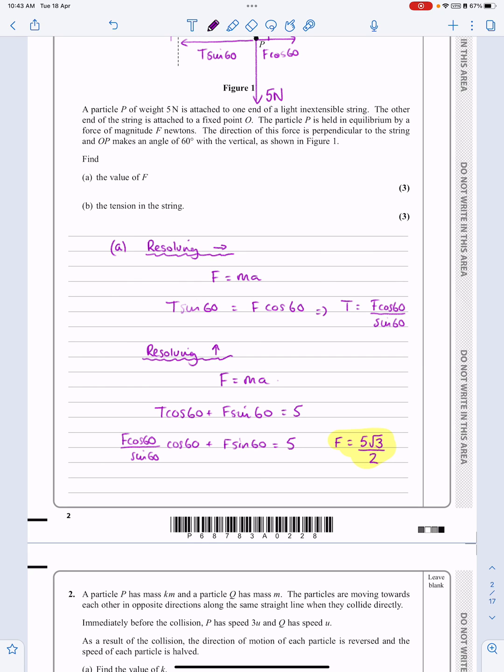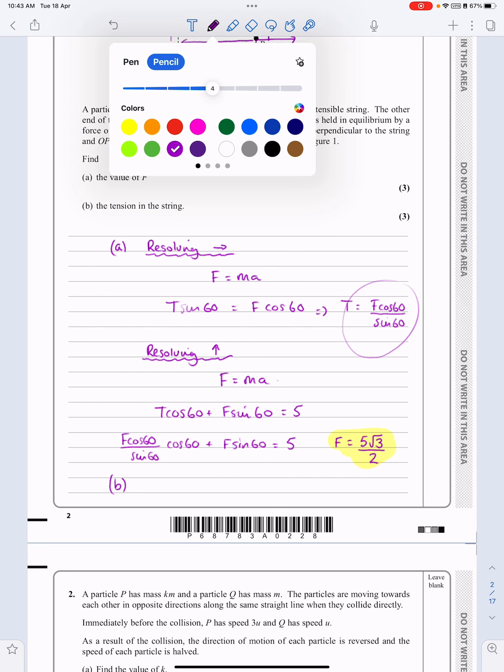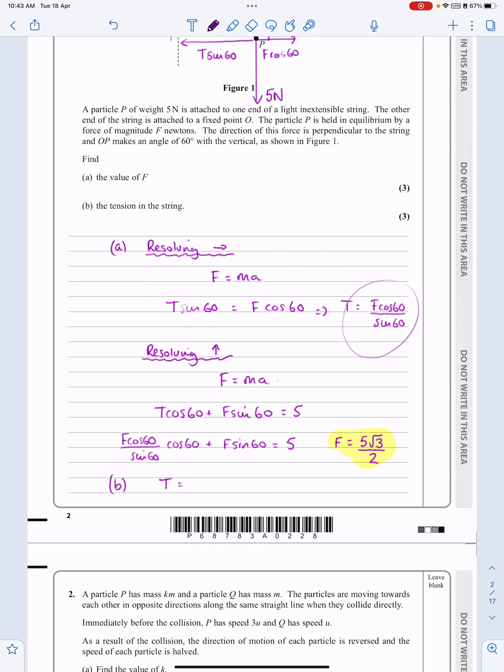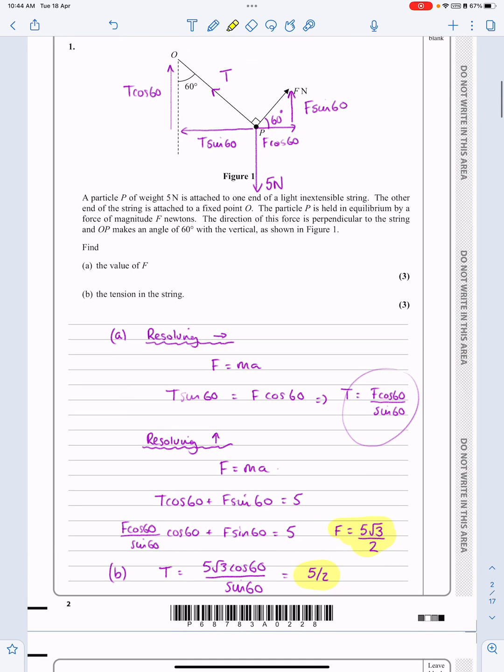Part B says find the tension in the string and the tension is up there. Okay, so part B, tension is F cos 60 over sine 60. And again, not taking any time to do those sort of things. It actually works out to be 5 over 2 for that one. Okay, don't want to make these videos too long for each one, but I'll put loads of them on. So that's how you do the first one. Dead straightforward. Six marks in the bag. We can move on to question number two.